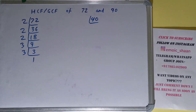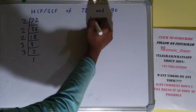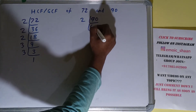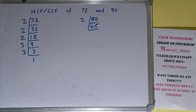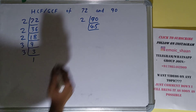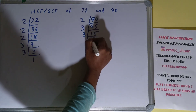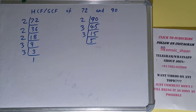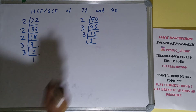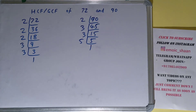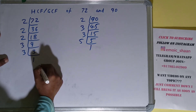Now we need to do the same with the number 90. Is 90 divisible by 2? Yes it is, and we'll have 45. Is 45 divisible by 2? No, so we'll check with the next lowest prime number, which is 3. Is 45 divisible by 3? Yes it is, and we'll have 15. 15 is again divisible by 3, we'll have 5. 5 is a prime number, so it is only divisible by itself, and we'll have 1. So we are done with the prime factorization step.